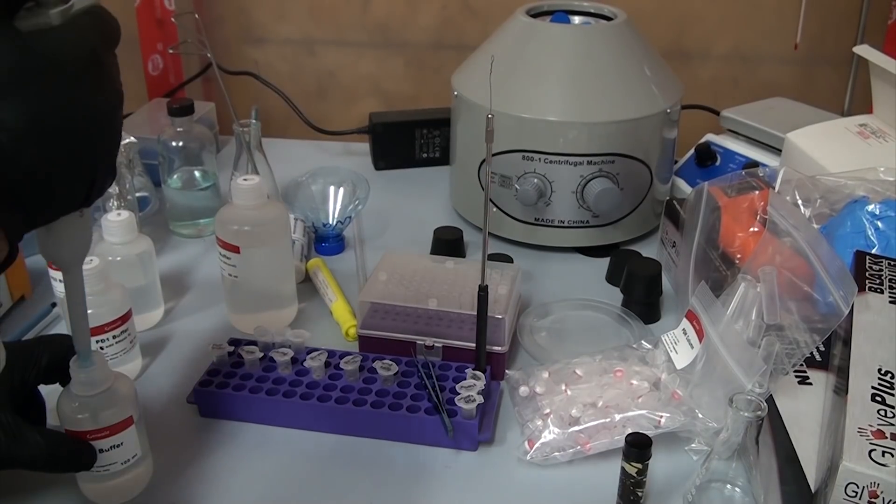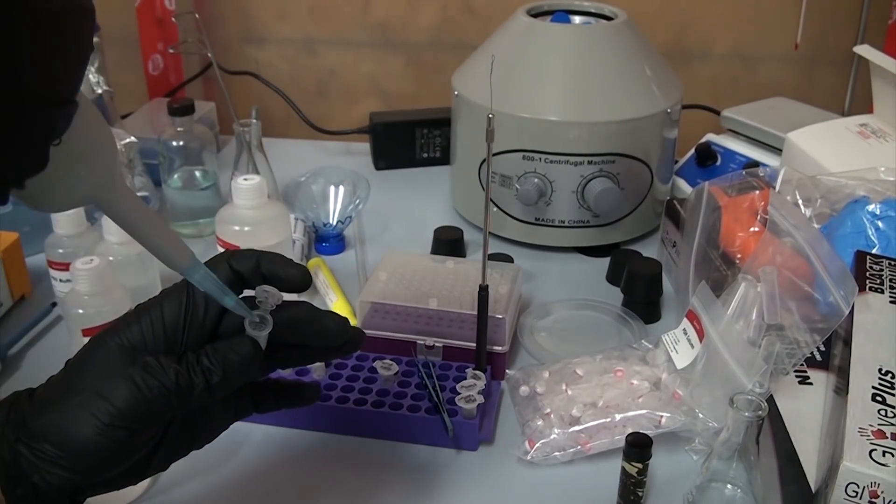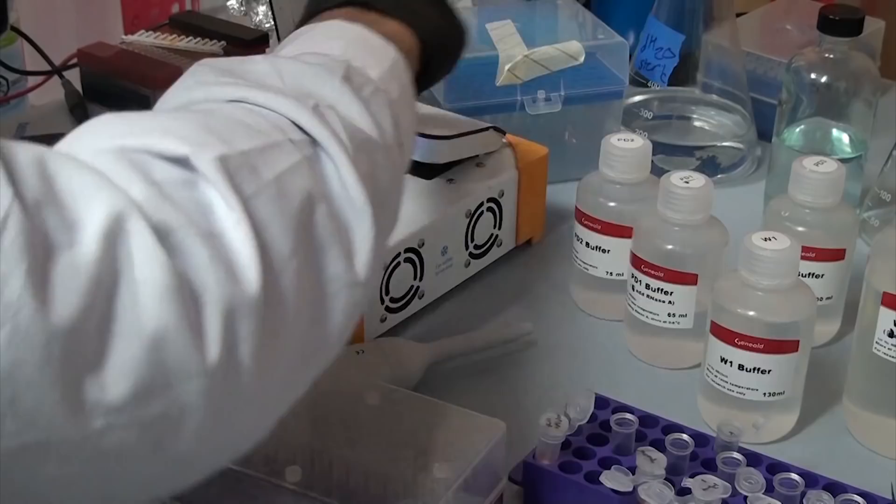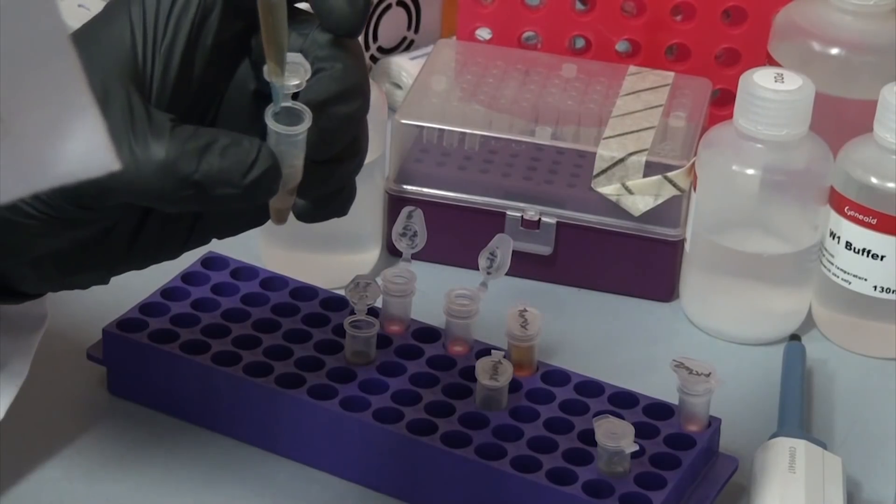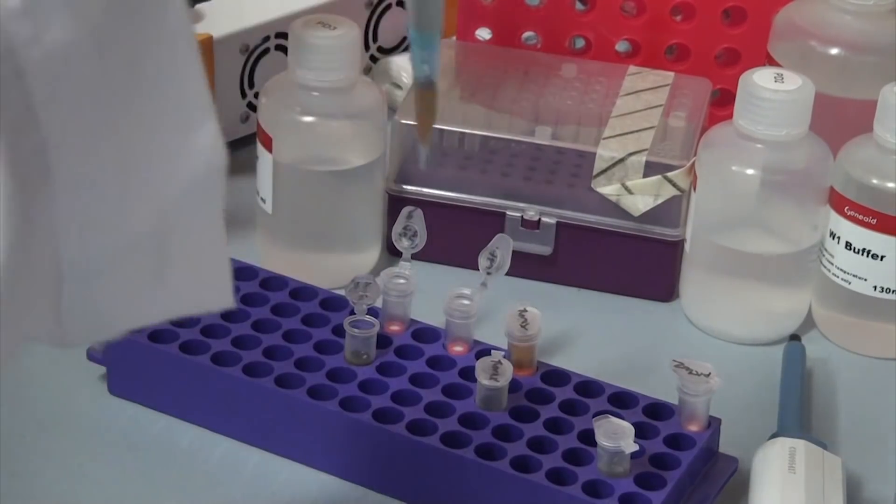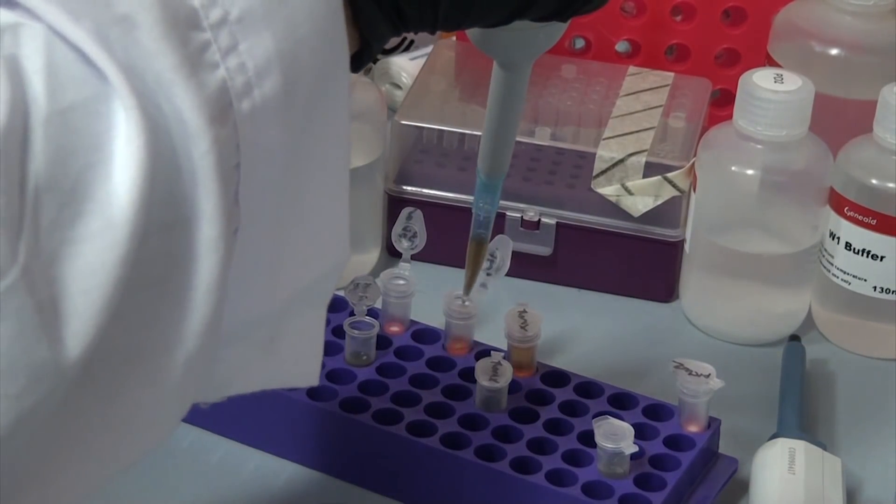Once it's done, we add PD-3, which seems to crash out all the proteins and debris from the solution, making it go cloudy. We spin this down, which collects all the floating junk at the bottom, leaving our DNA in the solution. Then we carefully pipette off the upper liquid, called the supernatant, and run it through the filter using the centrifuge.